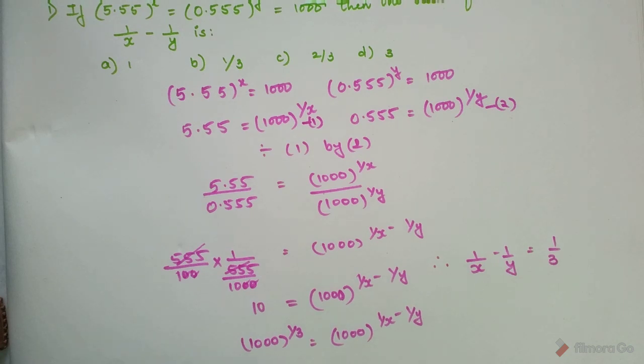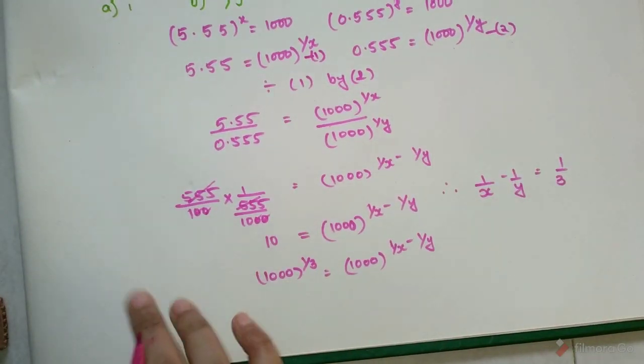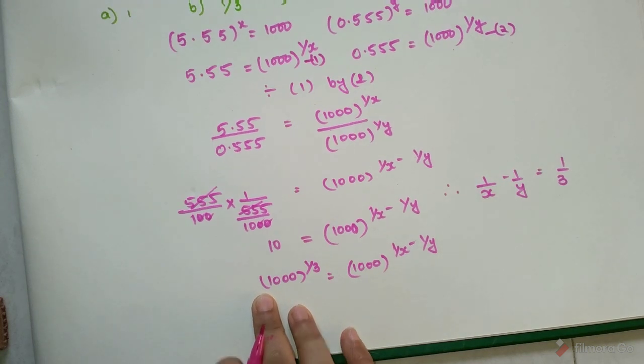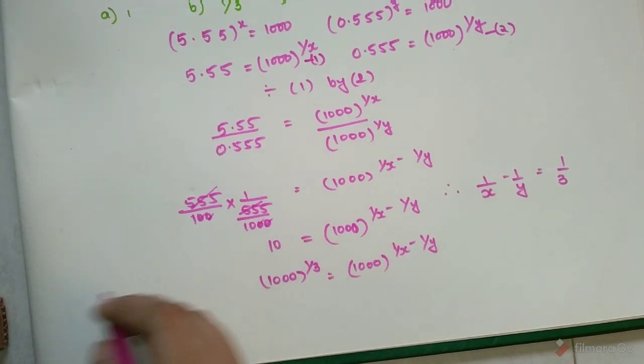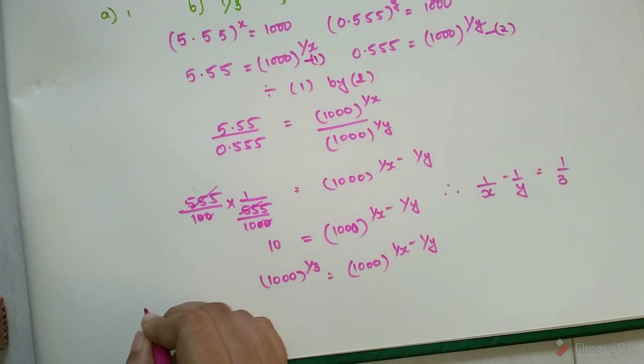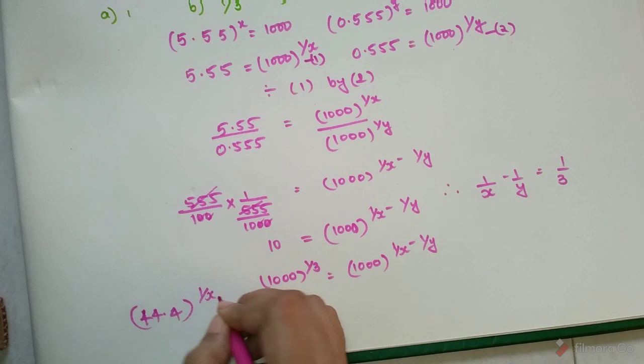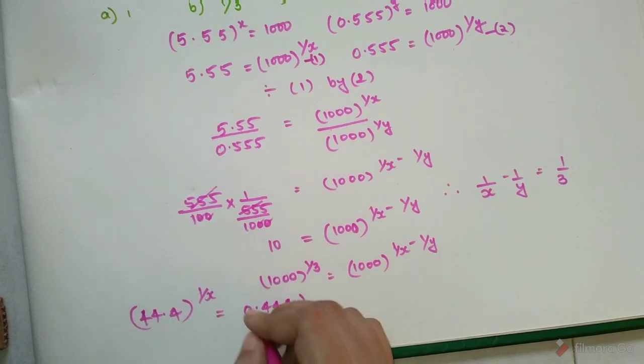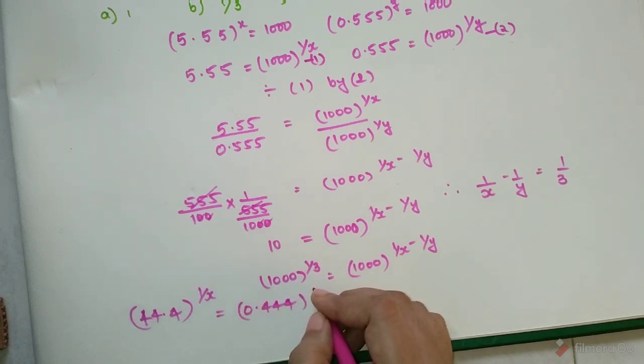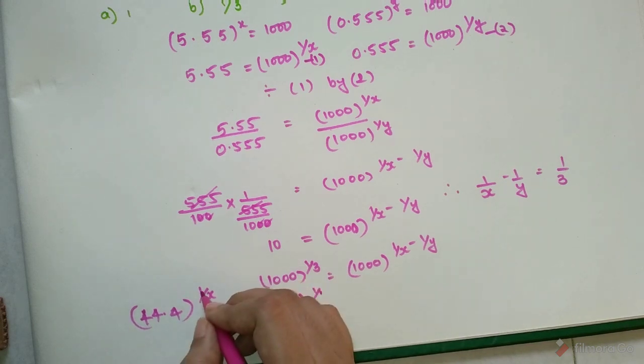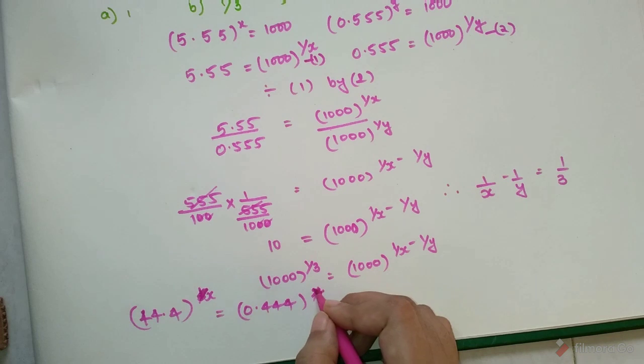Now coming to the part where I'll give you a question and you will tell me what will be the answer of that. So now (44.4)^x = (0.444)^y = 100. So now you will need to tell me what will be the value of 1/x - 1/y.